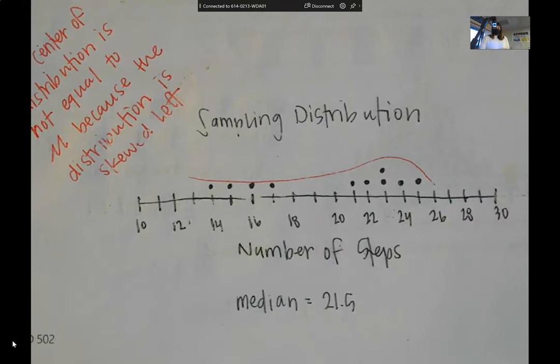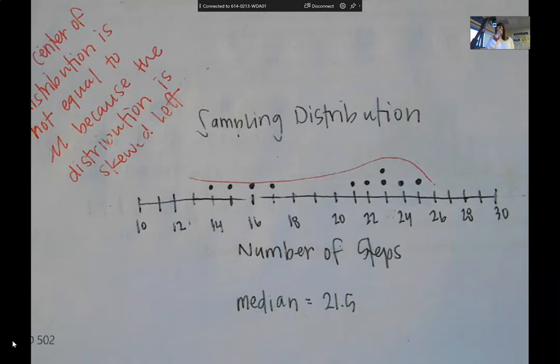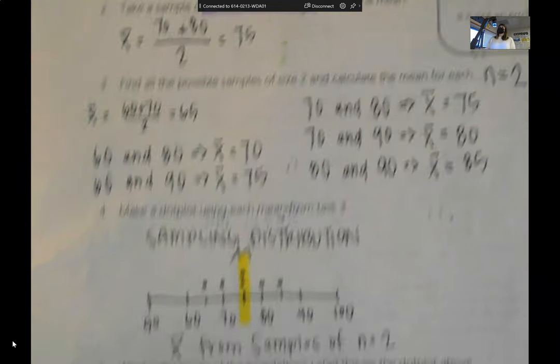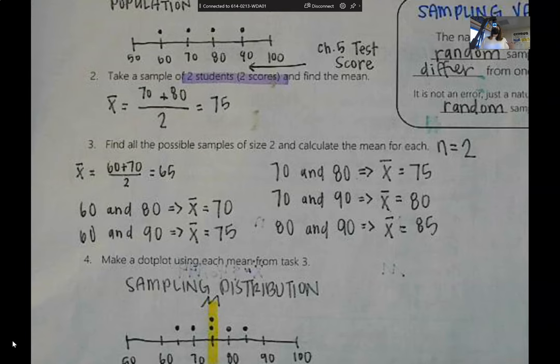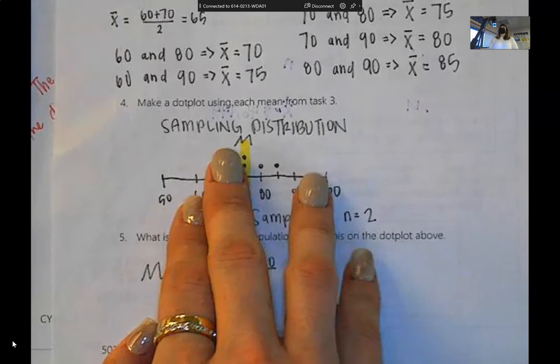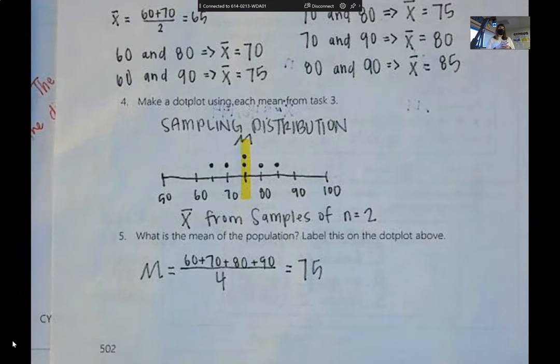And then lastly, it says make a display of the sampling distribution and it is a true sampling distribution. So ignore what I have in red. Ignore what I have in red and just check to see if yours looks like mine. So I want you to keep this because we're going to come back to what I have written in red by the end of today's lesson.